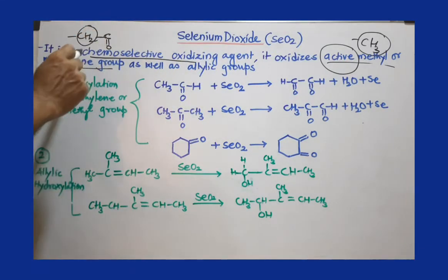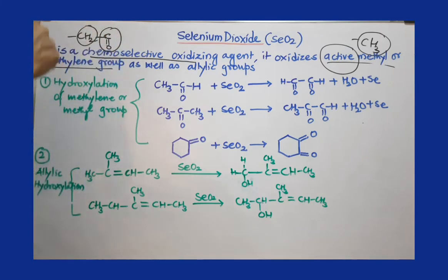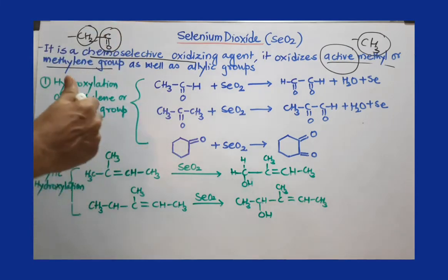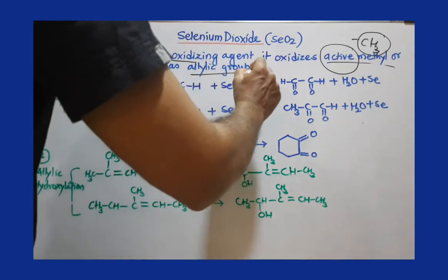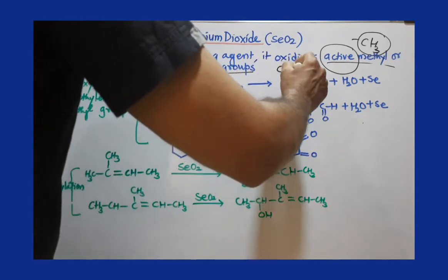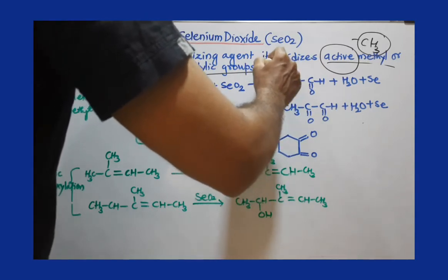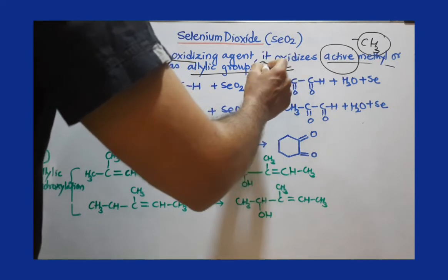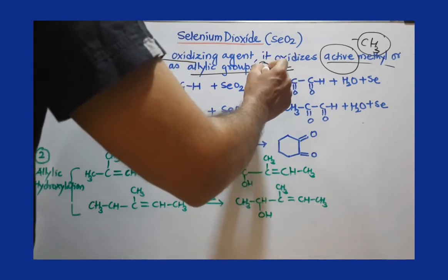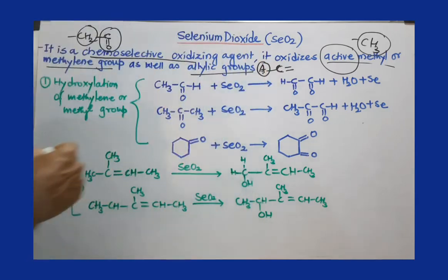Selenium dioxide selects either a methyl or methylene group that is active — meaning it has at least an electron-withdrawing group like a carbonyl — for oxidation. Another important reaction is that it can also select an allylic group. The carbon adjacent to a double-bonded carbon is the allylic carbon, and that carbon is selected for oxidation.